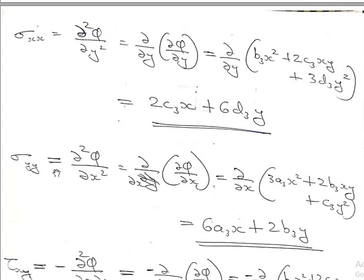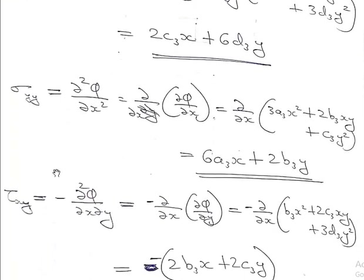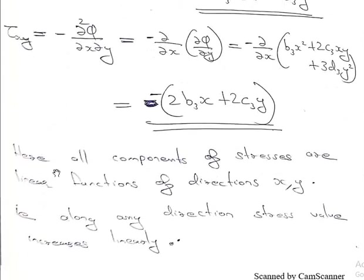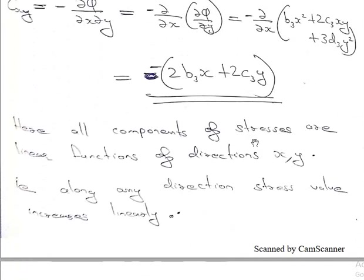In the first case, the stress components are 0. In the second-degree polynomial, the stress components are constant. In the third-degree polynomial, the stress components are constant and then linear. In the first case, the stress components are linear. From here, all components of stress are linear functions of directions X and Y.